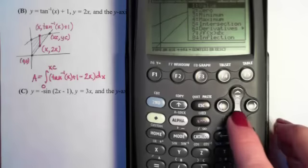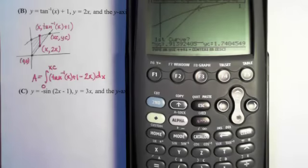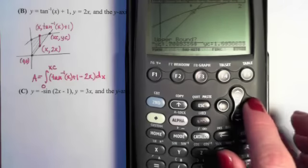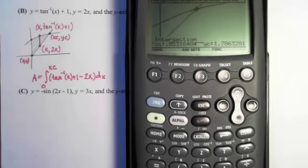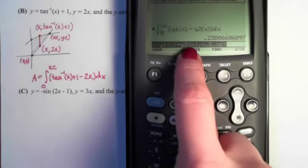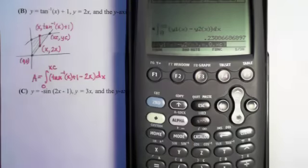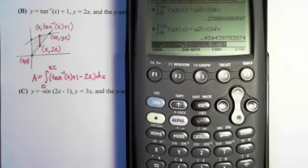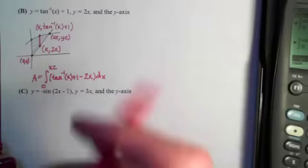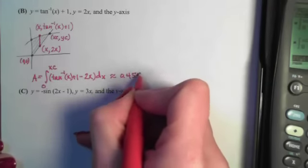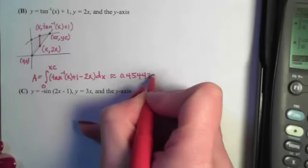So again, I'm going to have to find that intersection. And first curve, second curve, I'll move to the left, move to the right. Got my xc now. So if I go to my home screen, notice I still have y1 and y2 in there. So I've changed y1 and y2 to reflect this problem. So I can just leave it as is and do diamond enter and get my next answer, which is 0.454 and etc.